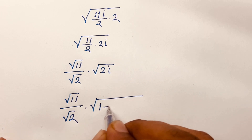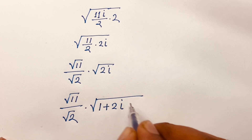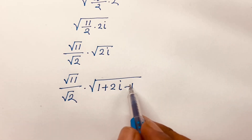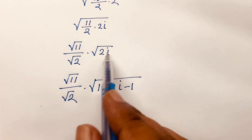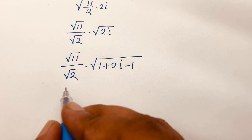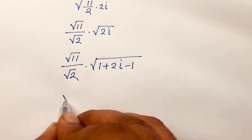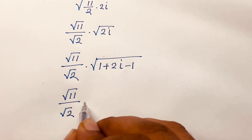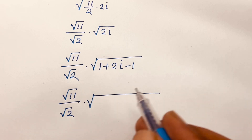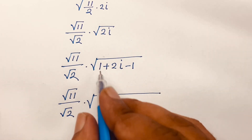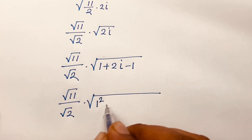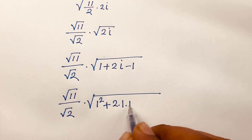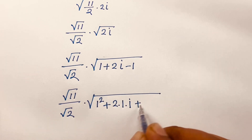Now I can say 2i equals 1 plus 2i minus 1. So 1 minus 1 equals 0, and we're left with 2i. Then it becomes square root 11 over square root 2, times square root of 1 squared plus 2 times 1 times i plus i squared.